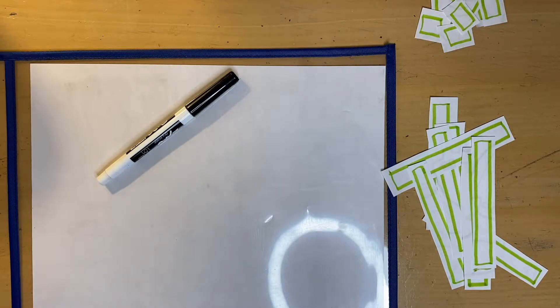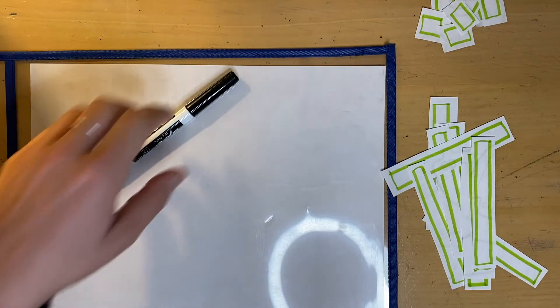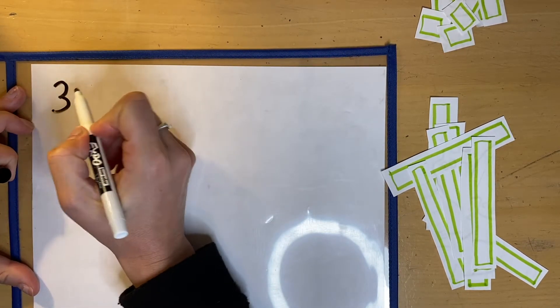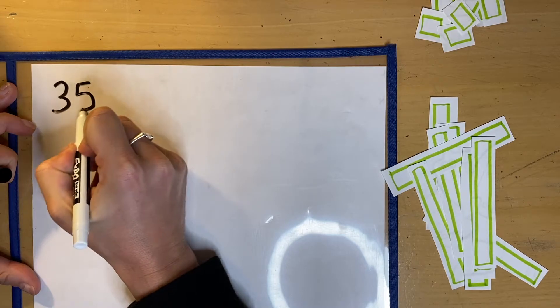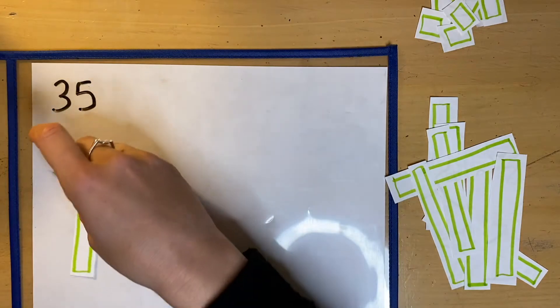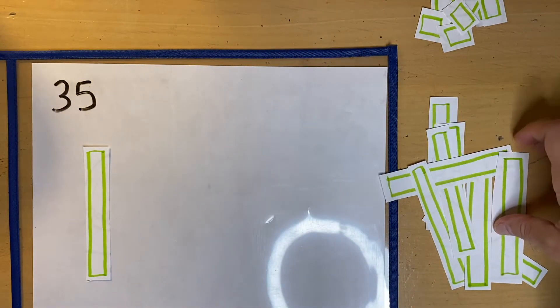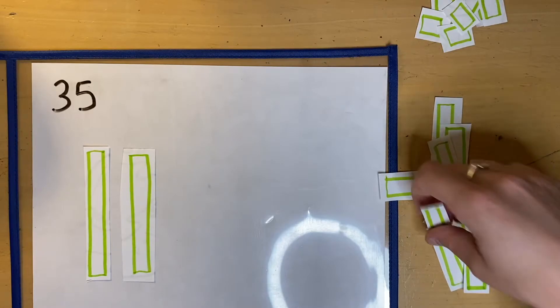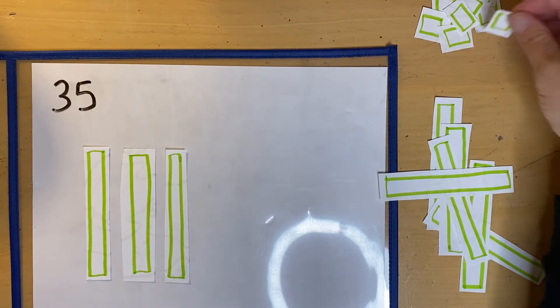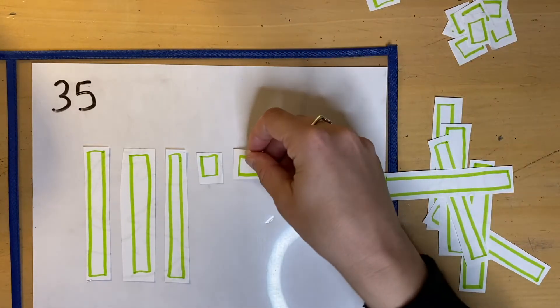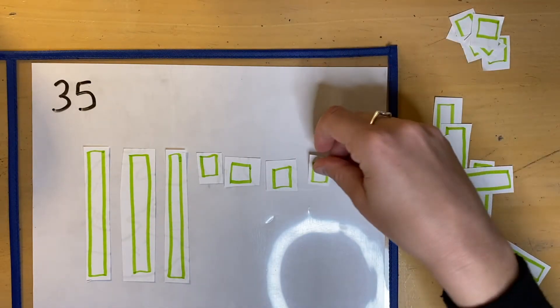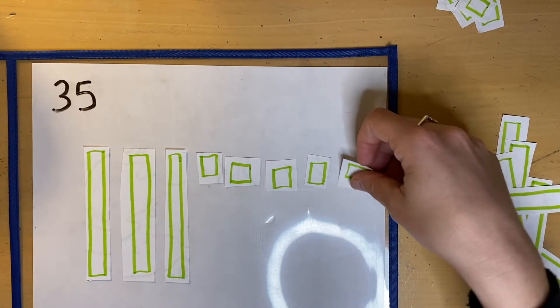But the first thing that we are going to do is we are going to build the number 35. So I'm going to write 35 up at the top of my paper and then I'm going to build the number 35. So I'll say 10, 20, 30, and then I'll freeze. 31, 32, 33, 34, and 35.